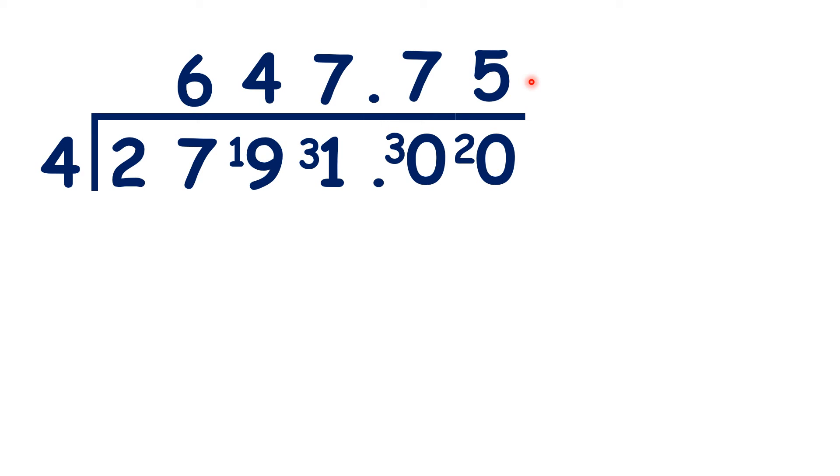So rather than giving our answer as 647 remainder 3, we can write our answer as 647.75.